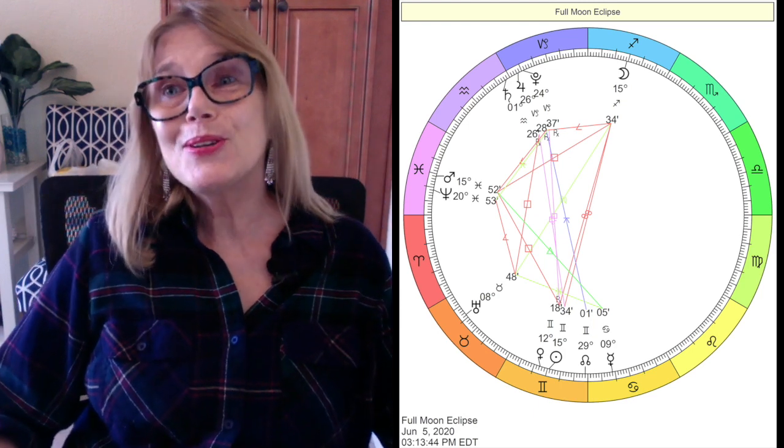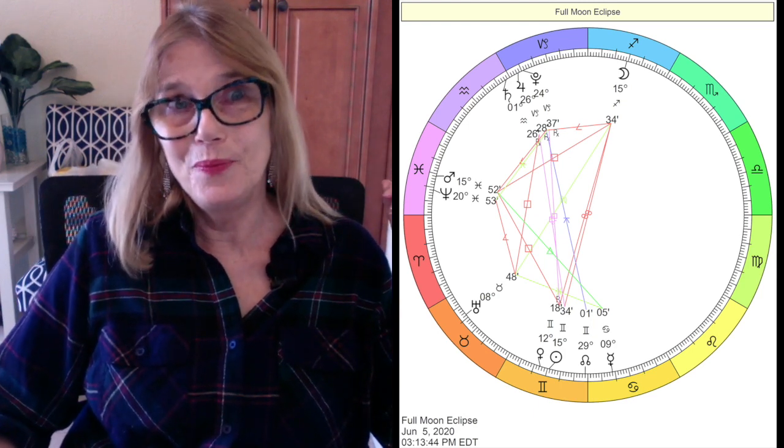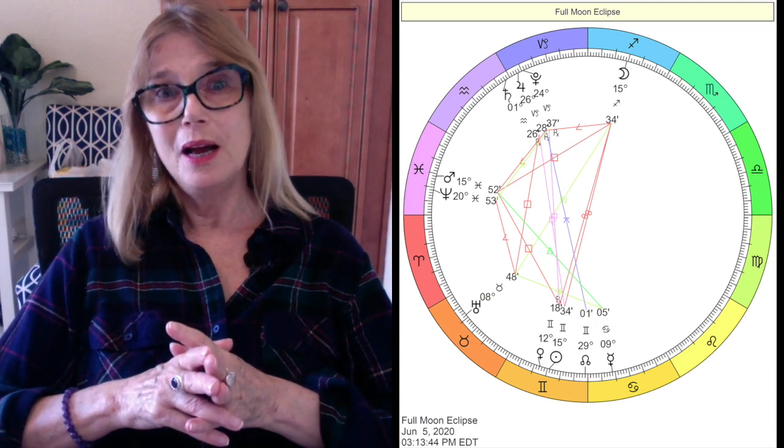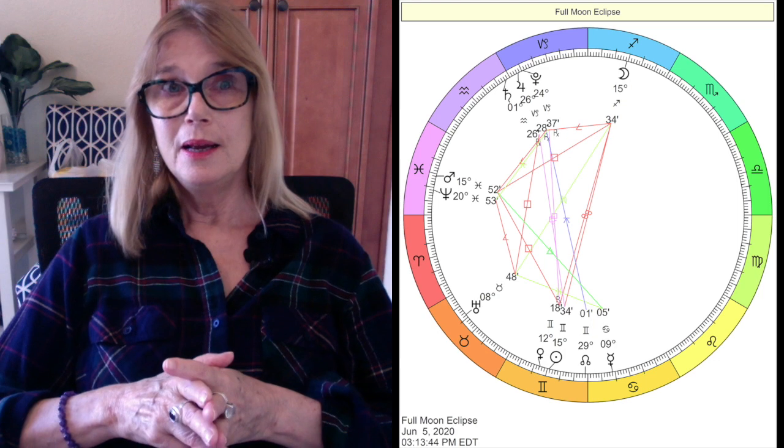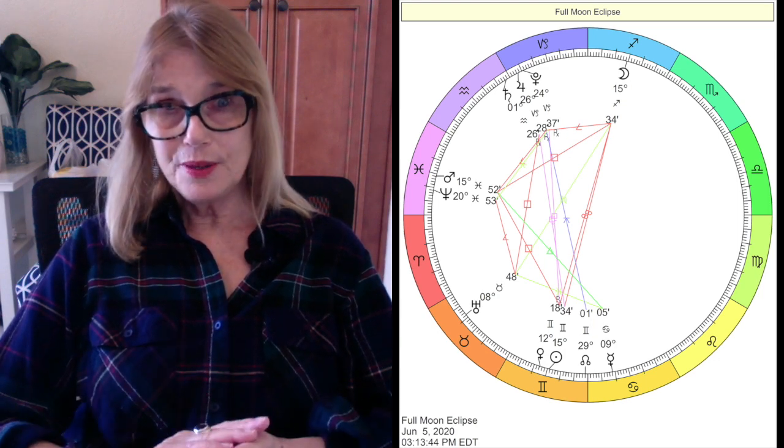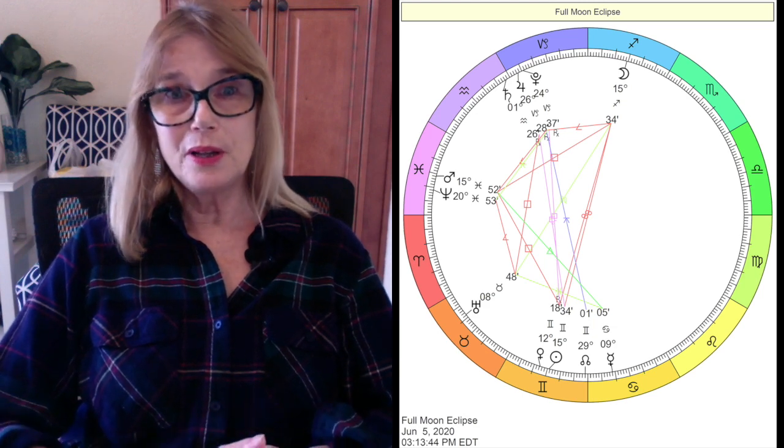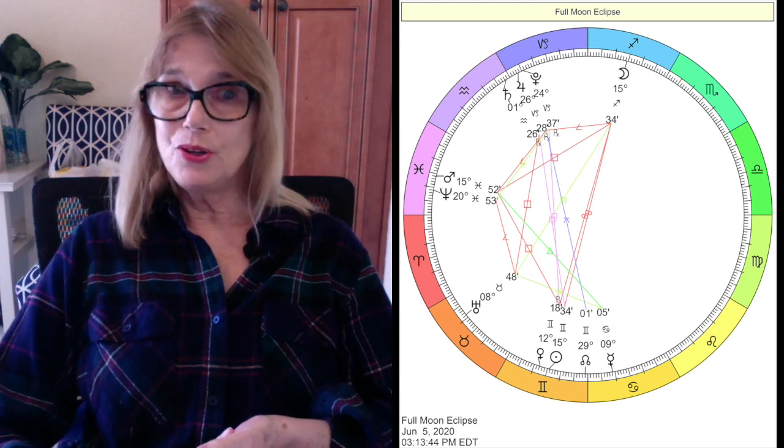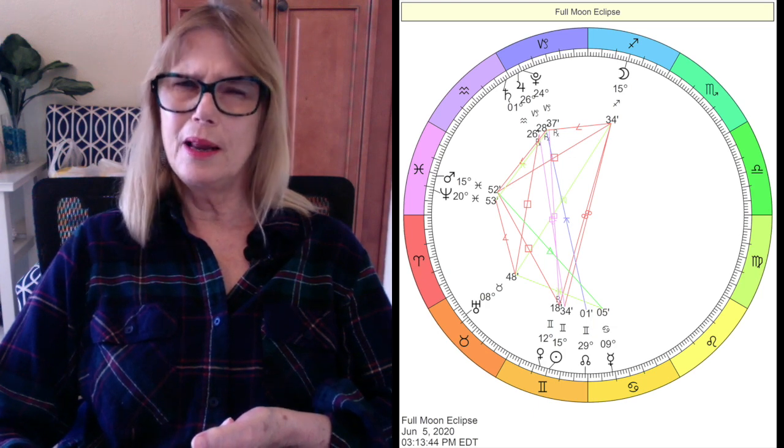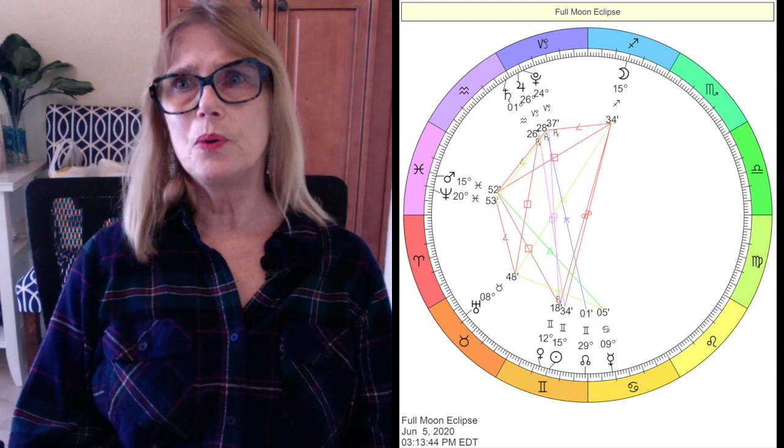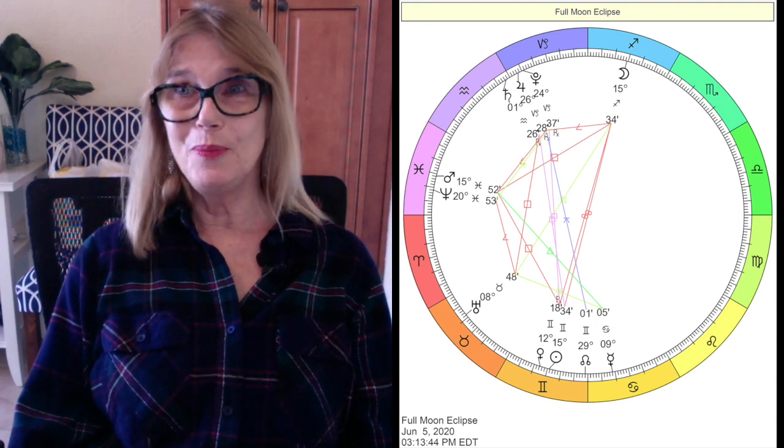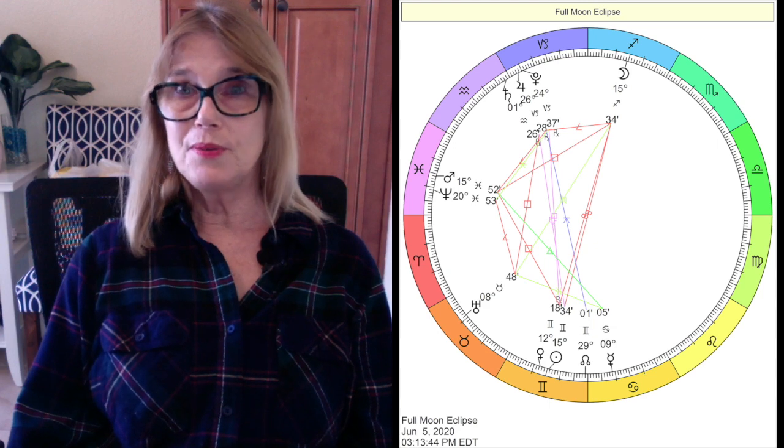The nodes are both in air signs now, which means the eclipses are going to be in air signs from now on. They're going to be on the Sagittarius-Gemini axis. Sagittarius is foreign affairs, legal affairs, law, international news. We're going to be hearing a lot of that. And we're communicating with people all over the world through Zoom because we can't leave our houses pretty much, which is fine with me.